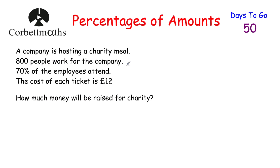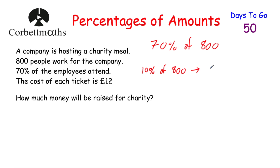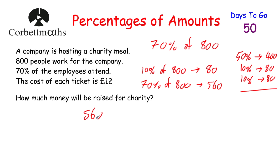Here's a wordy question. A company is hosting a charity meal. 800 people work for the company and 70% of the employees attend the meal. The cost of each ticket is £12. How much money will be raised for charity? First, we need to find how many people attended — that's 70% of 800. Using 10% of 800 equals 80, then 7 lots of 80 is 560. So 560 employees attended the charity meal. Now we need to multiply 560 by £12.